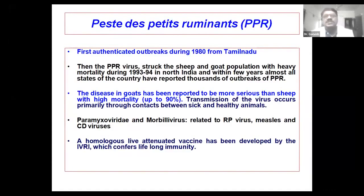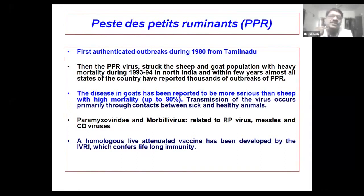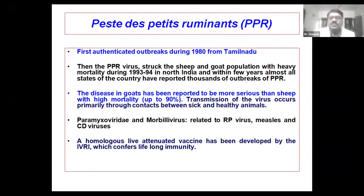This disease was reported in 1980 in goats. Before that, in 1979, it was first reported by Shaila et al. After that, this disease spread throughout India and you will find PPR everywhere. For this disease, we have a vaccine developed by IVRI which provides more than two years of immunity.